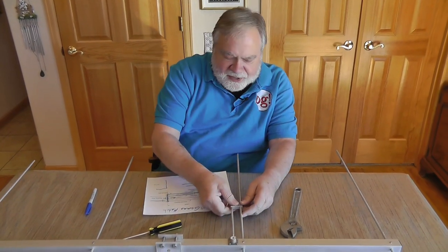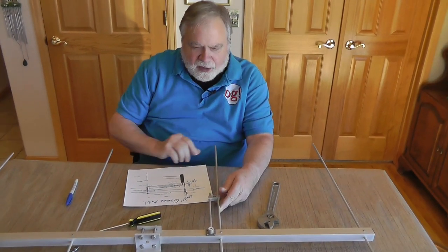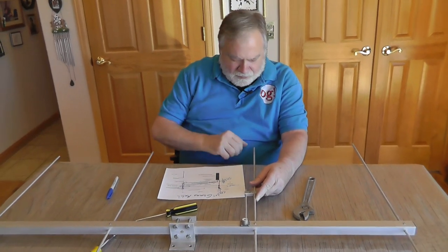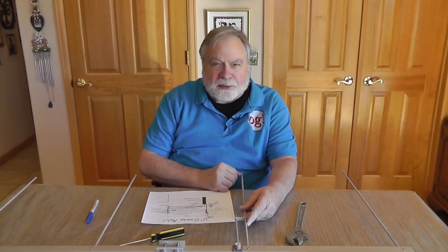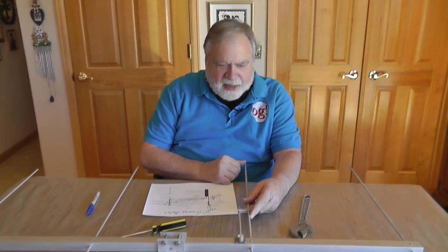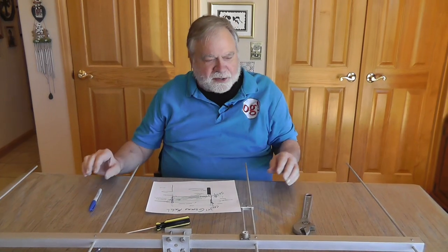Now this changes the reactance of this rod slightly. So you're going to find in your construction that you're going to have to shorten this rod by two to three percent. And this is already built into this thing because it's a commercial antenna.